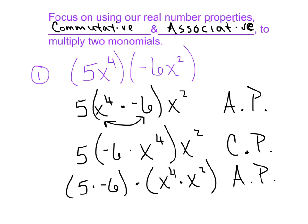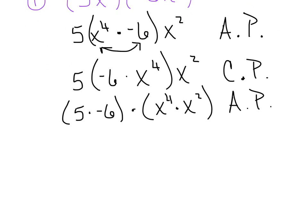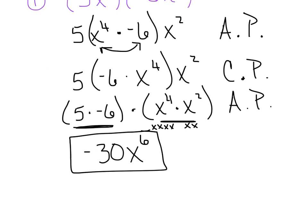That's painfully slow, I know, but I want you to have a good feel for why we're allowed to do what we do. By the time I multiply the two coefficients, I get negative 30. And multiplying the two bases — x to the 4th times x squared — I get x to the 6th. So negative 30x to the 6th is our final product.